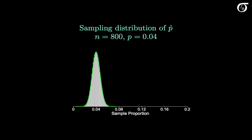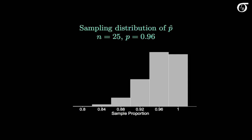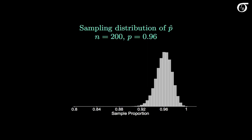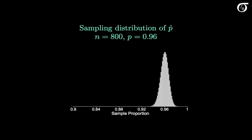When P is close to 0, a very large sample size is needed. For values of P close to 1, we see something very similar — just the mirror image. Here's the sampling distribution when n is 25 and P is 0.96: we see some left skewness and the distribution isn't very normal. Increasing the sample size to 50, 100, 200, 400 progressively improves normality, and at 800 it's looking quite normal with a well-fitting normal curve. When P is close to 0.5 we don't need a very large sample size, but when P is close to 0 or 1, a larger sample size is required.